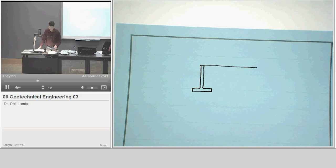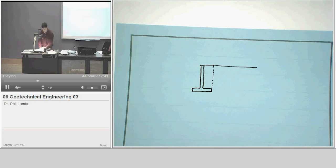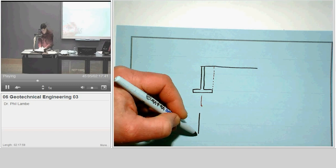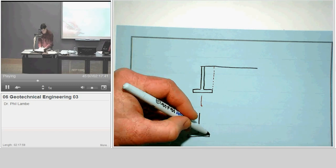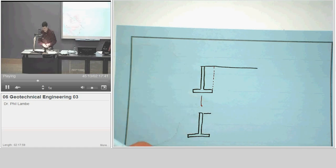The way that we handle this is we imagine that there is a vertical line going up from the back of the footing. Then we come and isolate this portion, the concrete wall, plus the soil that is over the back part of the footing. And then we look at a free body diagram.